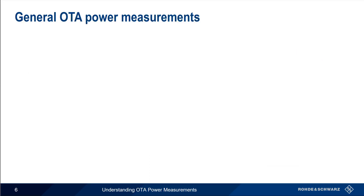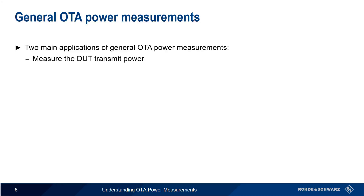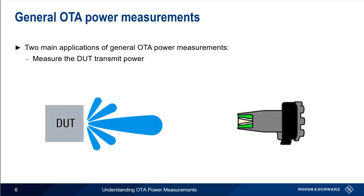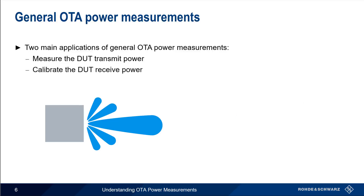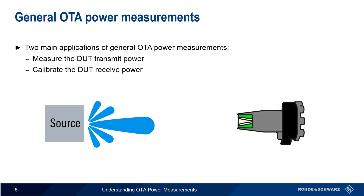Before we discuss beamforming measurements, let's start with the more basic case of general over-the-air power measurement. There are two main applications. The first is measuring the transmit power of a device under test, where our OTA power sensor is placed at a given distance from the DUT's transmitting antenna and power is measured — usually adjusted by the path loss between the DUT transmit and the sensor's receive antenna. The second case is calibration of the DUT receive power, where we place a sensor at the DUT position and adjust the source power until the desired receive level is reached.